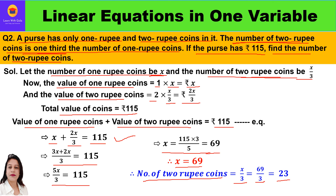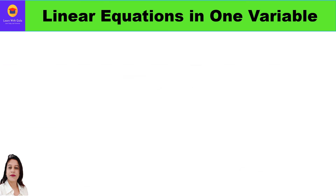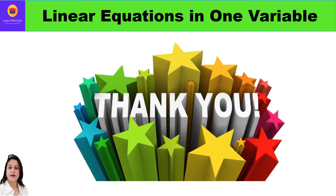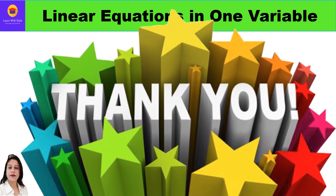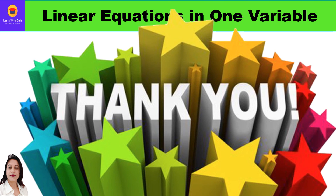They have asked to find the number of 2 rupee coins, which is x by 3. Since x is 69, the number of 2 rupee coins is 69 by 3, which equals 23. So the number of 2 rupee coins is 23. Hope you have understood these word problems related to money. Please do like and subscribe to my channel, leave your comments in the comment section. Thank you everyone, have a great day ahead.